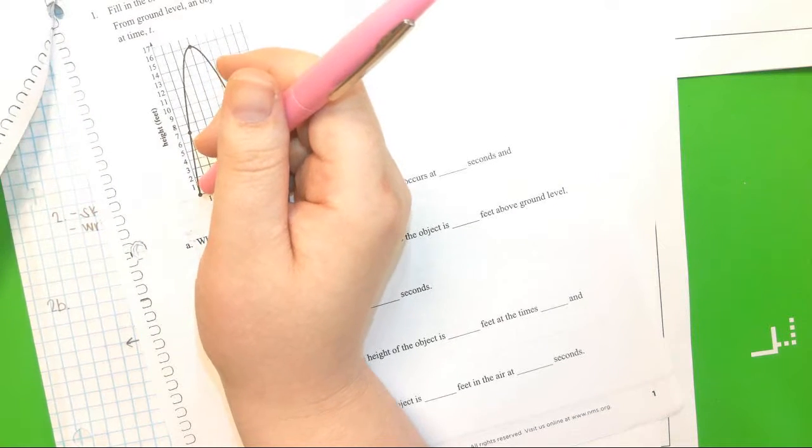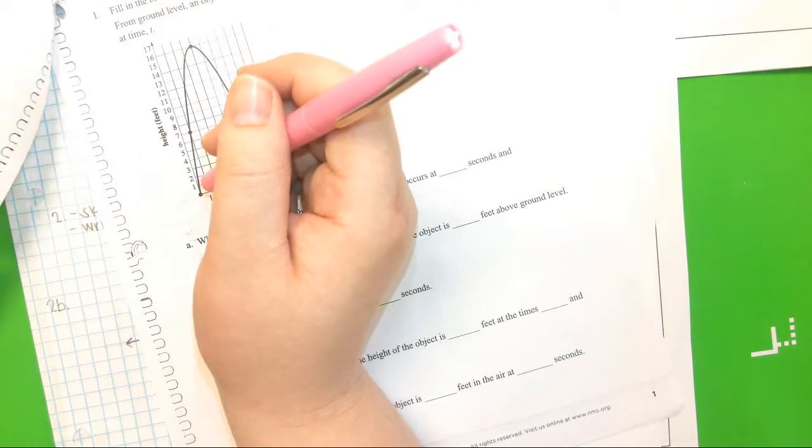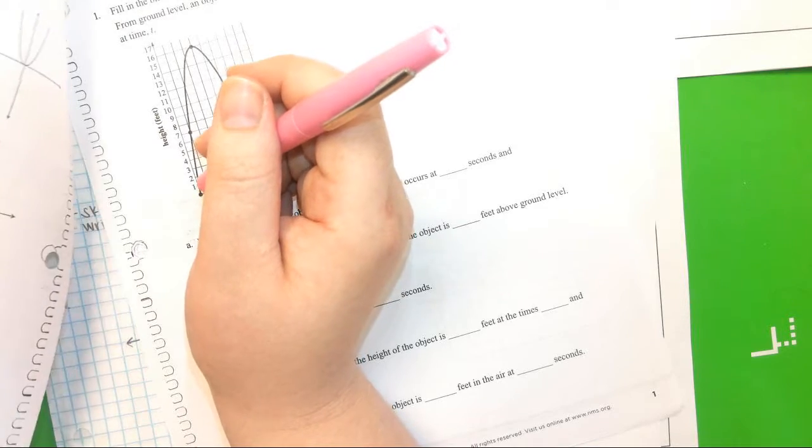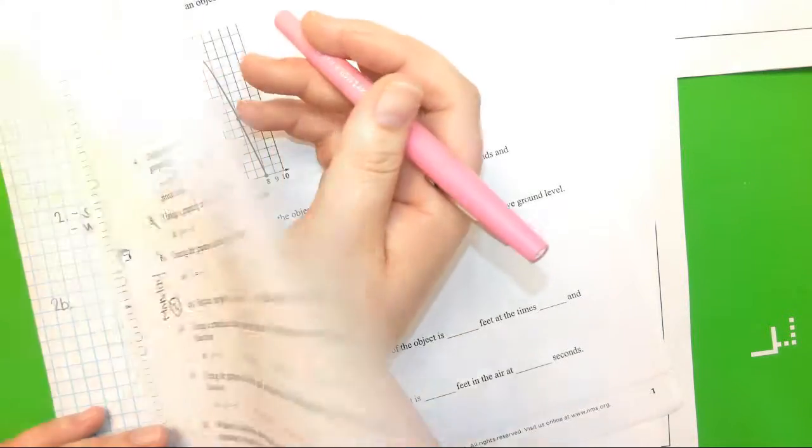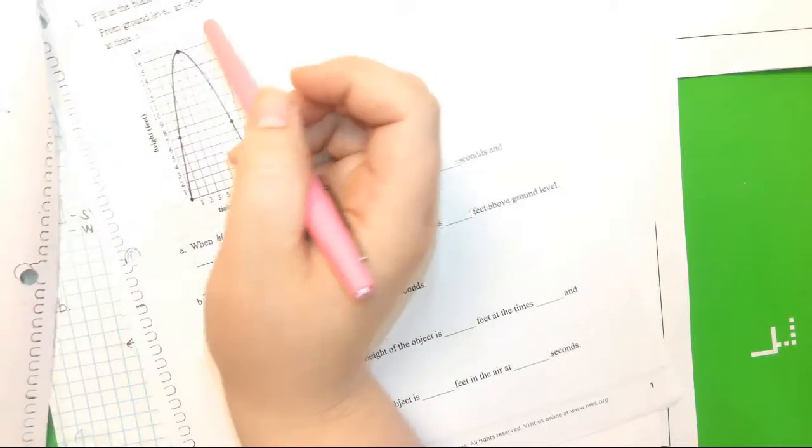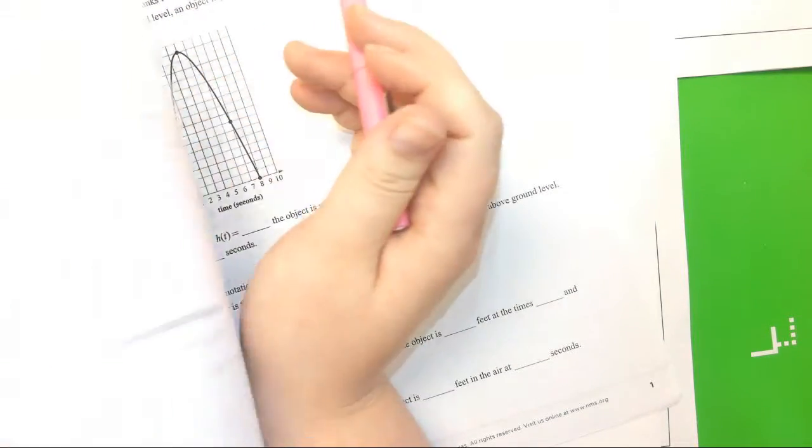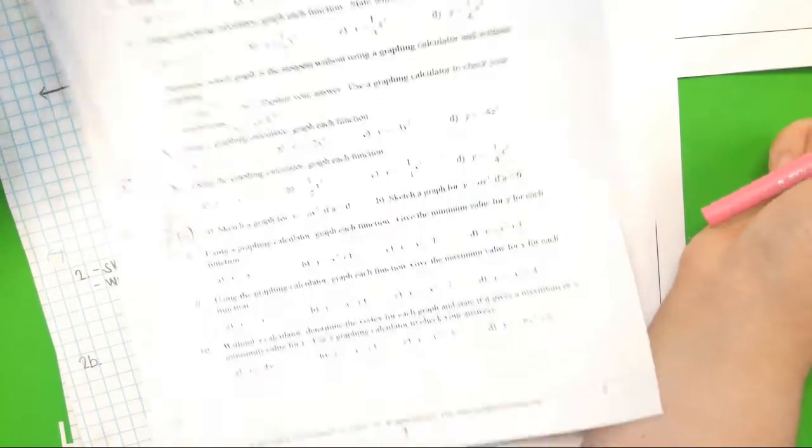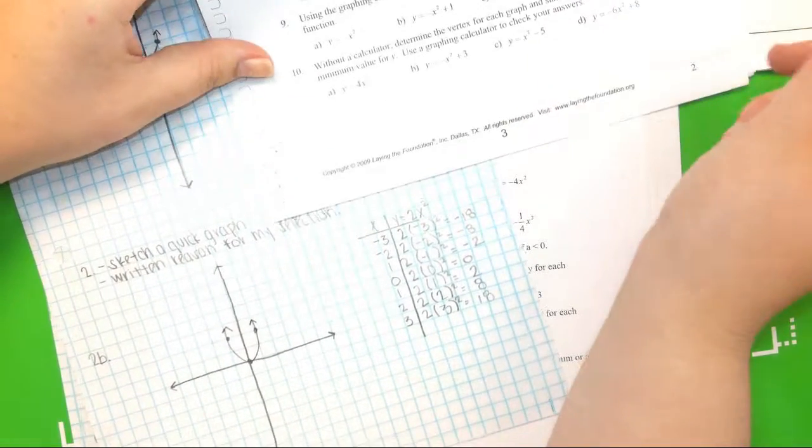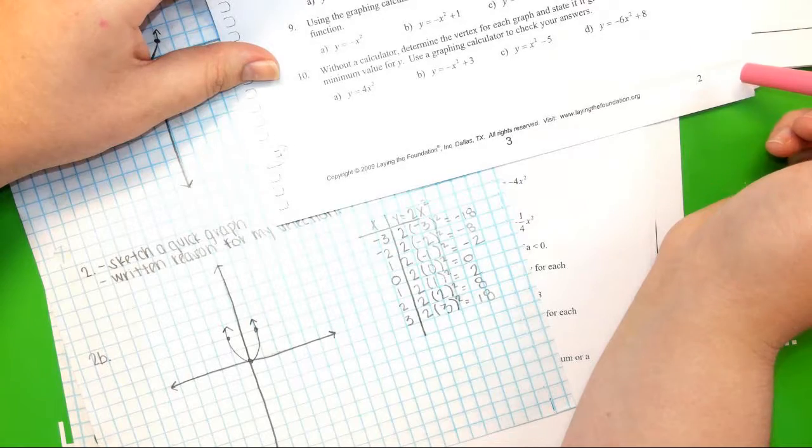The ones on the back are all multiple choice. So, surely we can figure that out. And since it says match on 11, 12, and 14. On 10, 11, 12, and 14. It says match. Does that word match imply that you have to explain yourself? No.